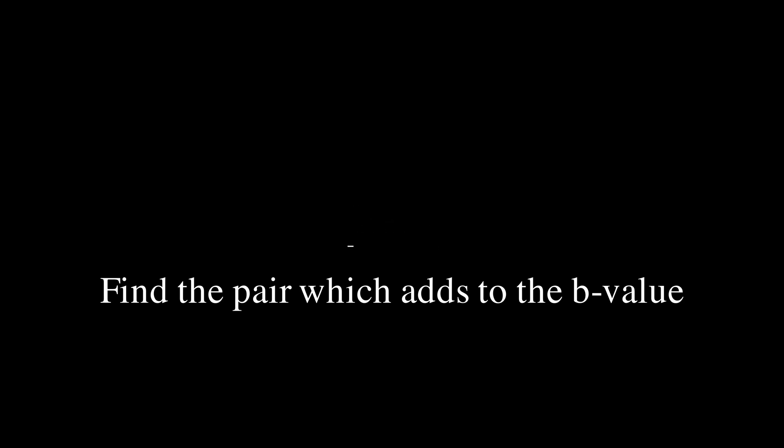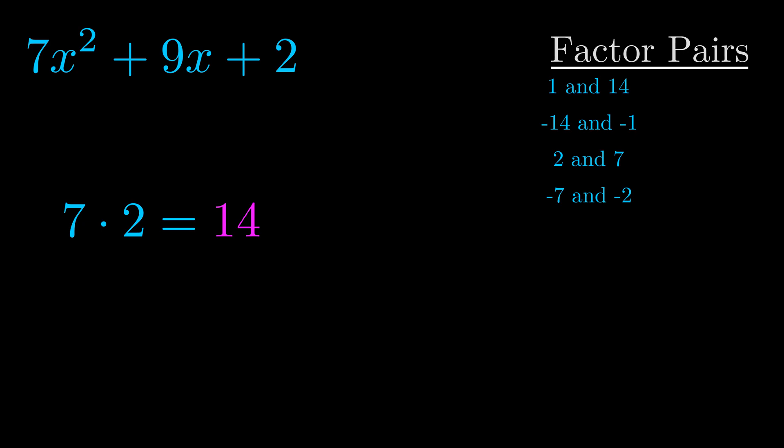The b value is the coefficient on the x term. That's the middle term, the one that we haven't done anything with yet. And really this is the only factor pair that we need.